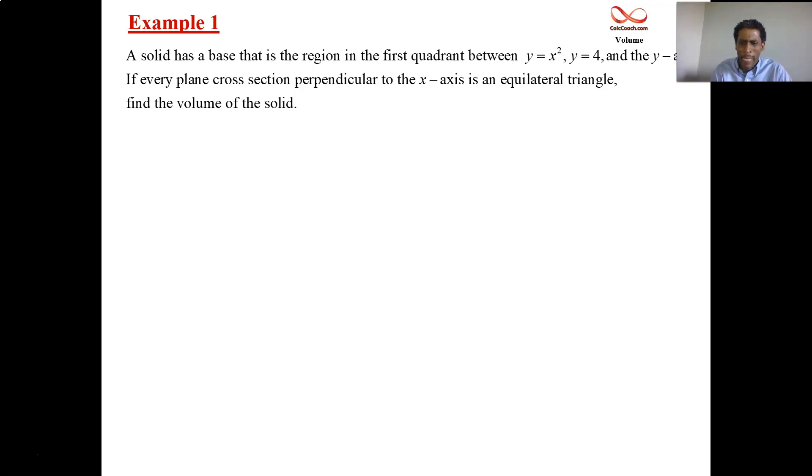A visual is helpful, very helpful. When the slicing happens perpendicular to the x-axis, the integral is going to be in x. So first off, what's this region? Y equals x squared, that's a parabola, two parts to it, left and right-hand side, but we want the first quadrant. Y equals 4, that's a horizontal line, the y-axis, so that's our region there.